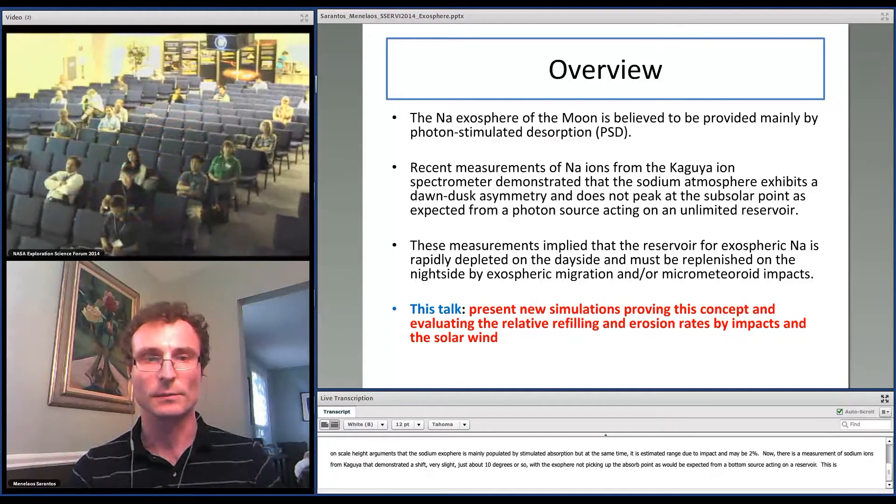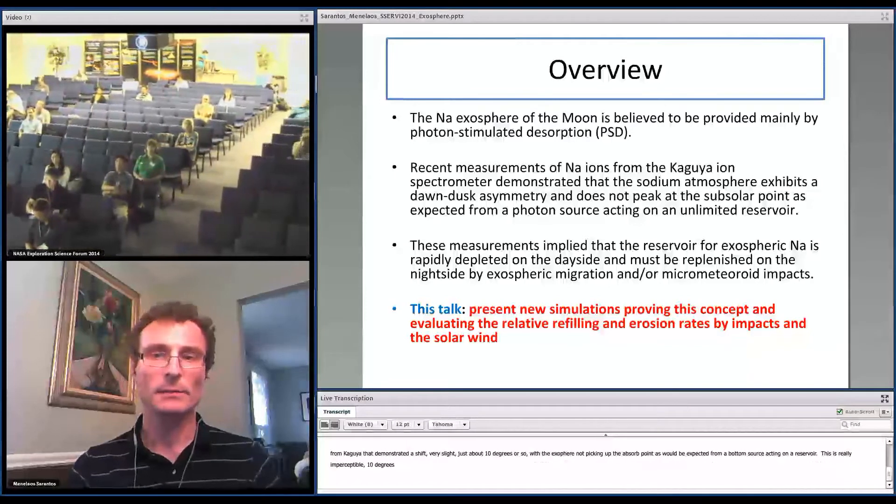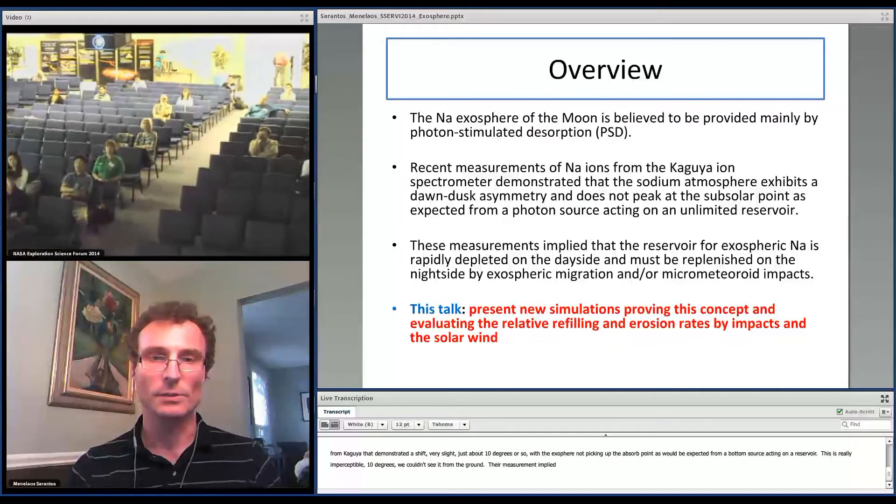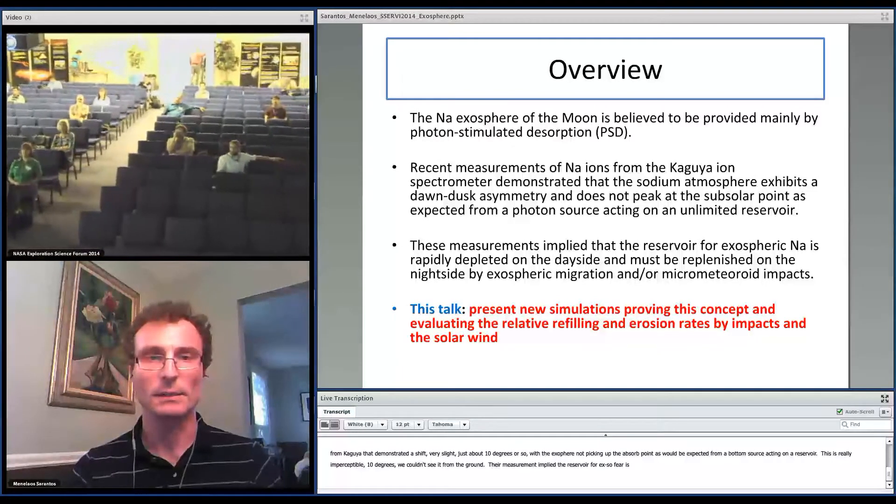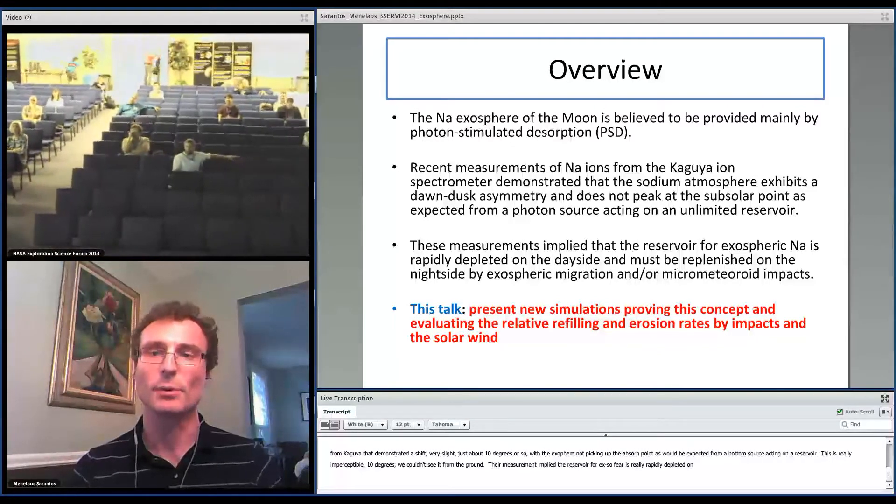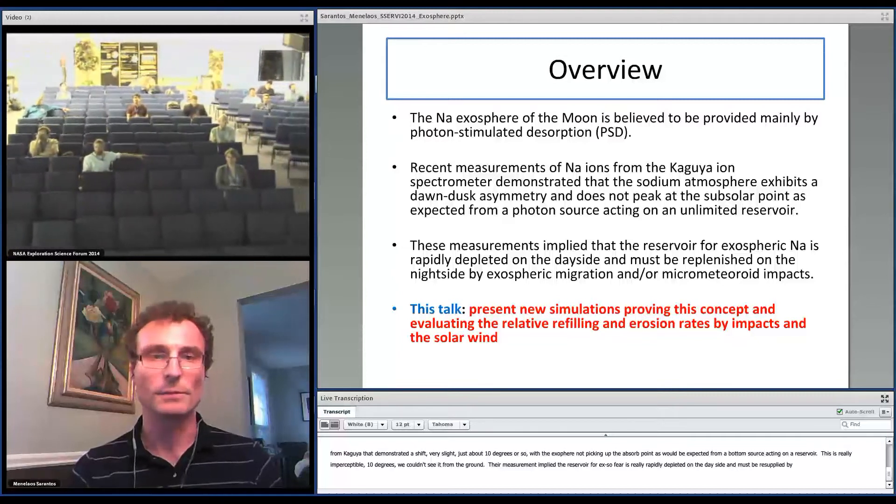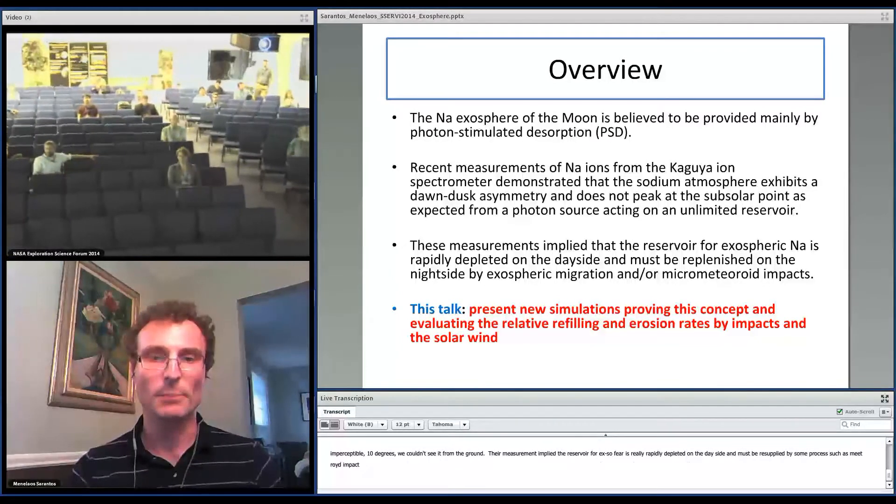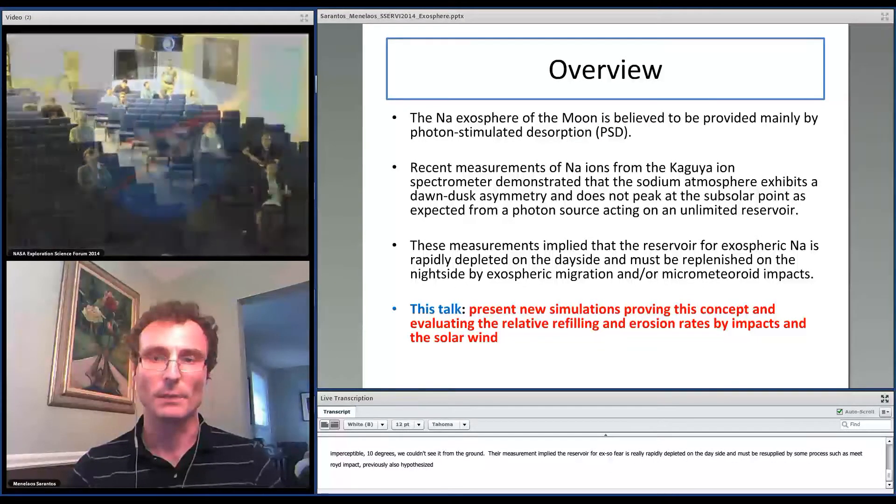This is really imperceptible, 10 degrees, we wouldn't be able to see it from the ground. So their measurements imply that the reservoir for exosphere sodium is really rapidly depleted on the day side and must be resupplied by some process, such as meteoroid impacts.